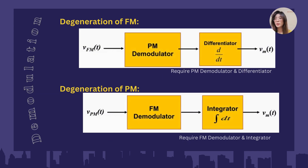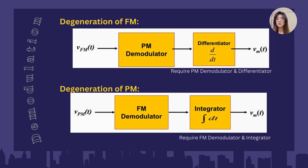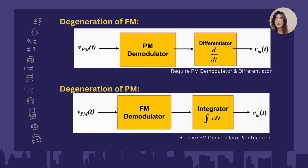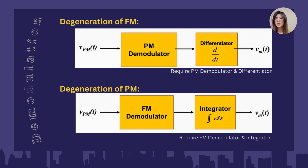The same concept applies to demodulation. There are also two types: demodulation of FM and demodulation of PM. For FM demodulation, we know that it requires a PM demodulator and also a differentiator. While for demodulation of PM, we require an FM demodulator and also an integrator.